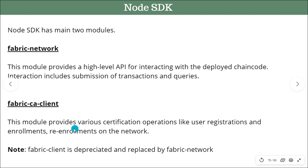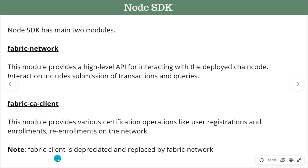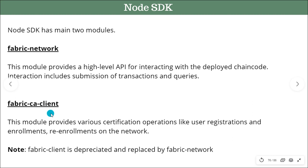The second module is fabric-ca-client. Some changes happened when Fabric 2.x came into the picture. In the earlier version we had a low-level API known as fabric-client — it is still there but it is going to be deprecated going forward. We recommend you to always use fabric-network instead of fabric-client.